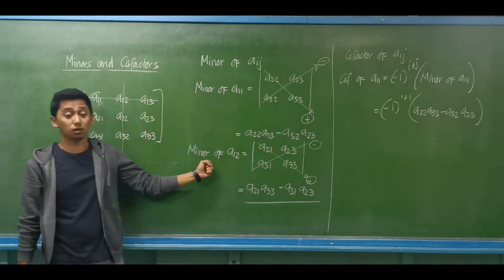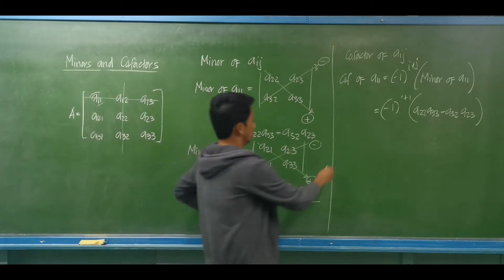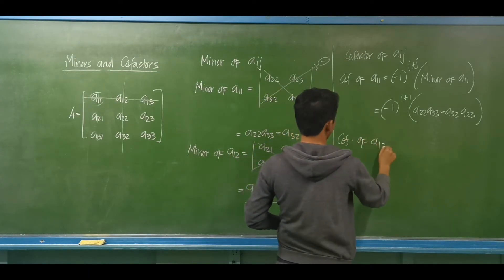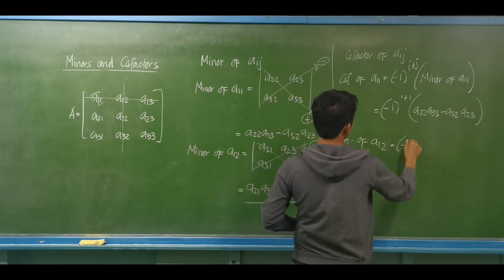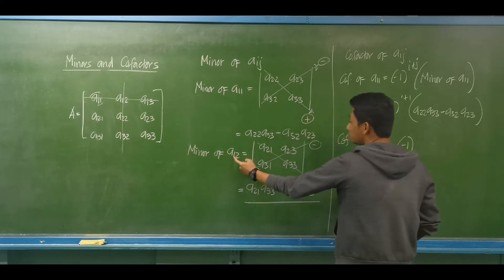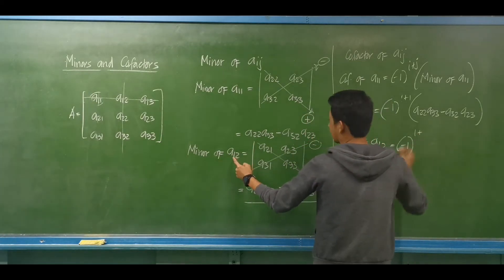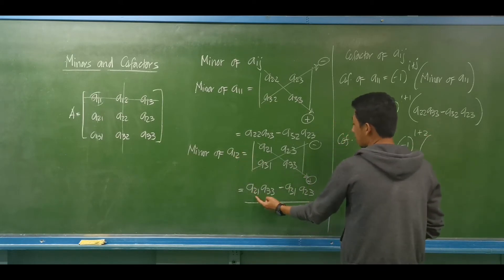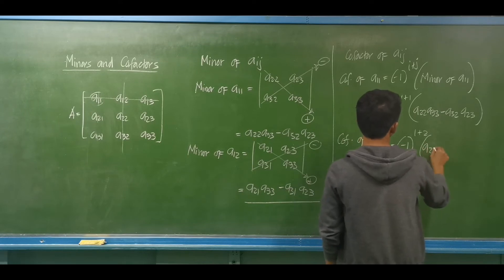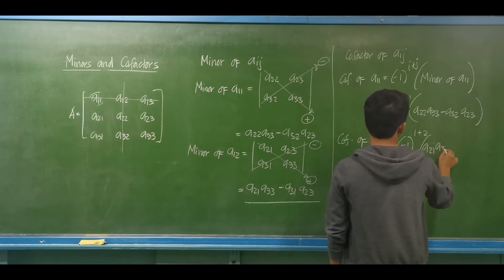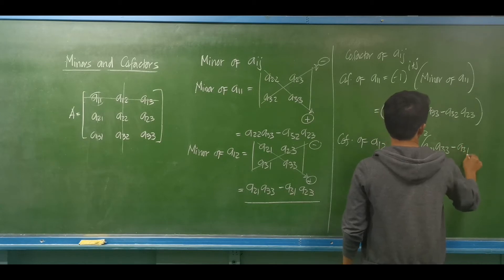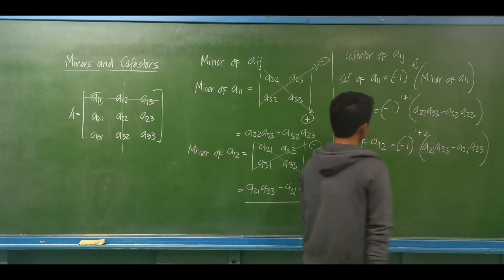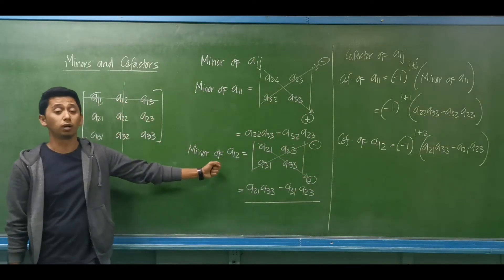For the cofactor of A12: this equals (−1)^(1+2) multiplied by the minor of A12. The minor of A12 is A21·A33 minus A31·A23. Since (−1)^3 equals −1, the cofactor of A12 is negative times the minor of A12.